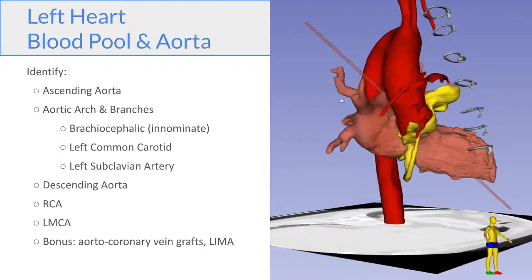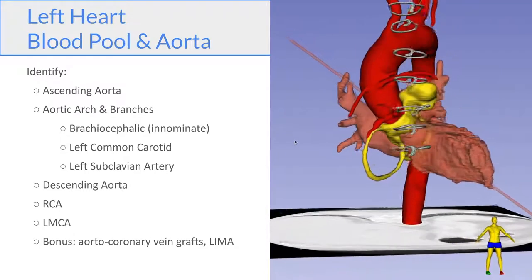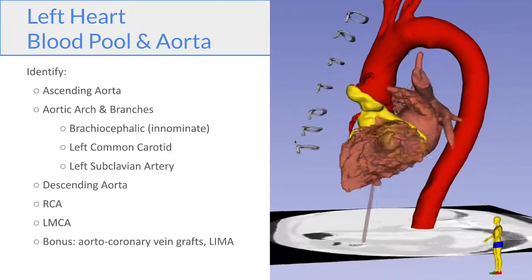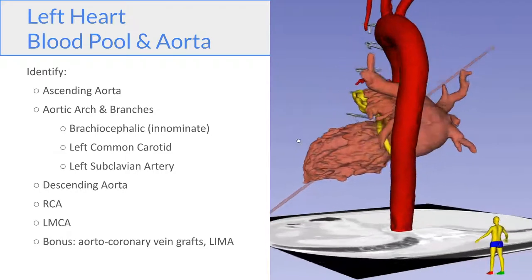So here you can see the RCA, as well as the vein grafts in the ascending aorta. And here you can see the left main, just a little snapshot there.